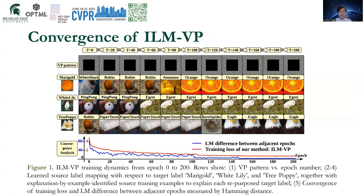We provide a visualization of the convergence progress of our ILM-VP method on the FLOWERS-102 dataset. The first row shows different stages of the input perturbation, and the second to fourth rows show three representative downstream classes' correspondent source labels. At the bottom, the last row shows the label mapping difference between adjacent labels. Along with the training process, the visual thematic meaning of source-downstream label pairs becomes more and more aligned — they just look more alike. The Hamming distance of label mapping difference between adjacent epochs also indicates the convergence of label mapping and the stability of our proposed method.